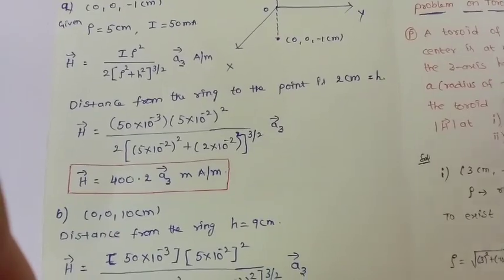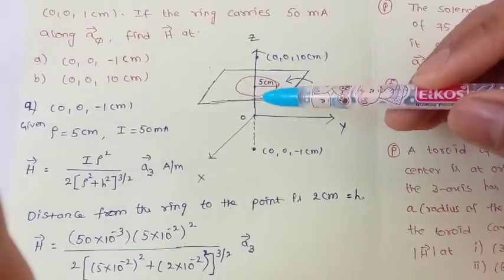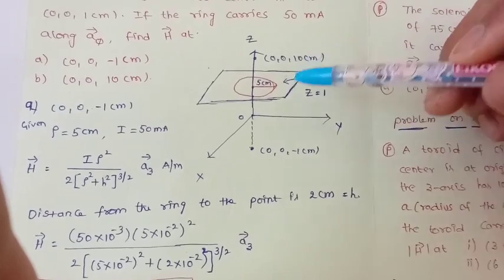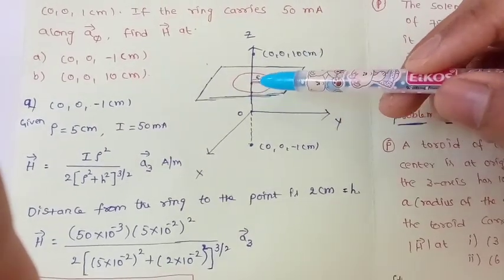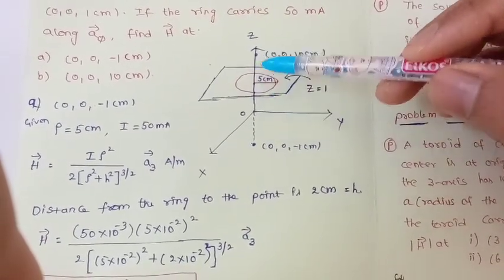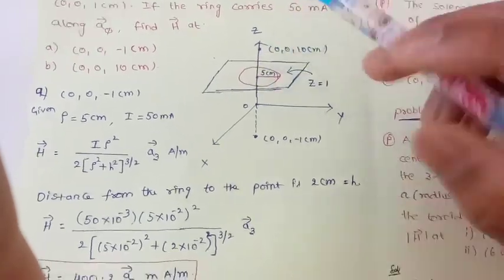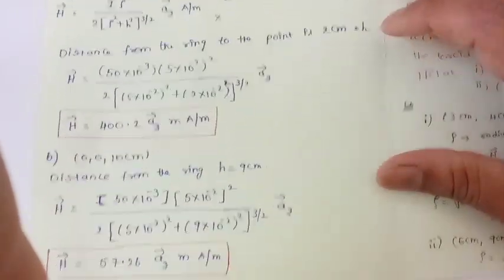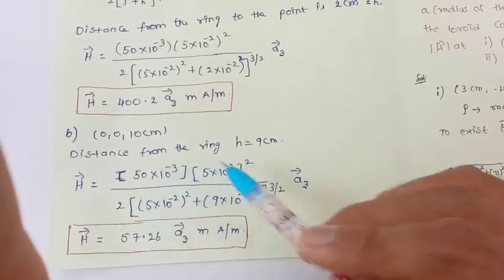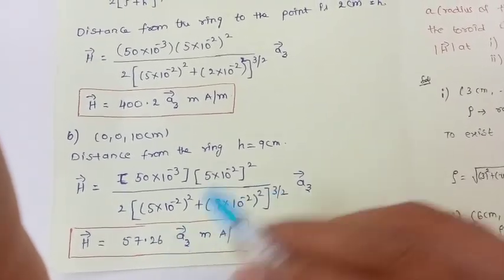For the second point (0, 0, 10 cm): the ring is at z = 1 cm and the point is at z = 10 cm on the positive z-axis. The distance from the ring to the point is 10 − 1 = 9 centimeters, so h = 9 cm. The remaining parameters ρ and I are the same, and we apply the same formula.